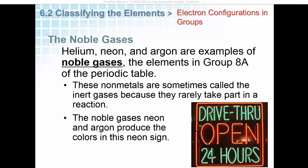Helium, neon, and argon are examples of noble gases, the elements in Group 8A of the periodic table. These nonmetals are sometimes called the inert gases because they rarely take part in a reaction. The noble gases neon and argon produce the colors in this neon sign.